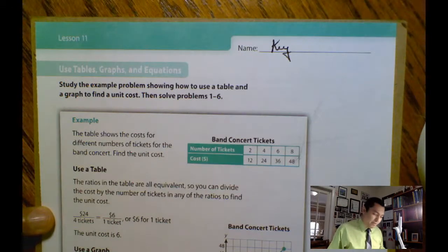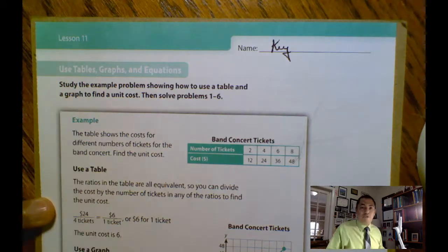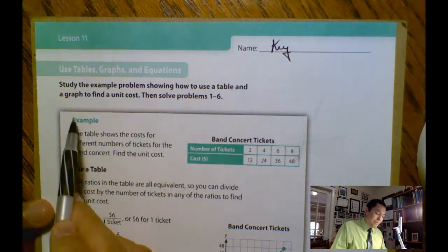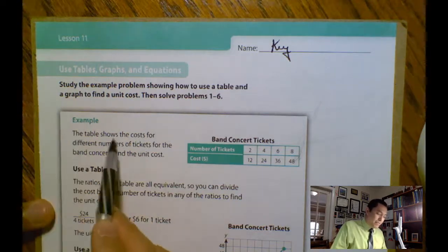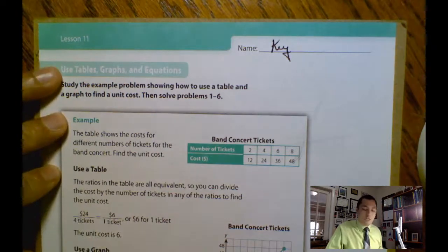We're going to do the second part of lesson 11. Use tables, graphs, and equations to make the interpretation of the problems. We have the first example. The table shows the cost for a different number of tickets for the band concert. Find the unit cost.